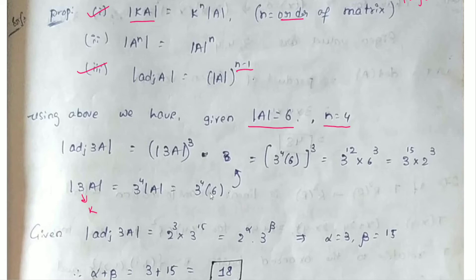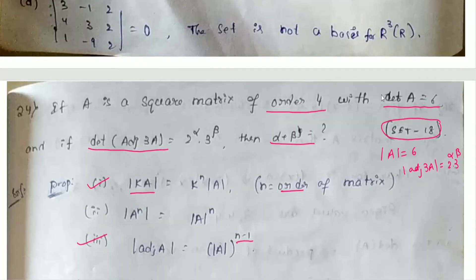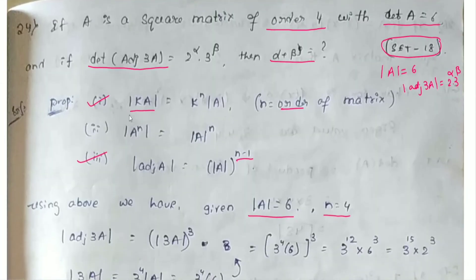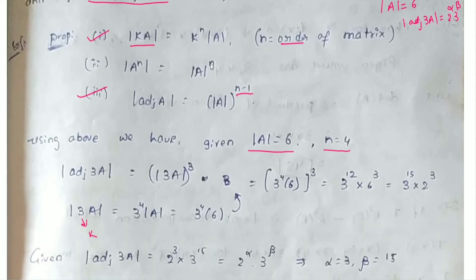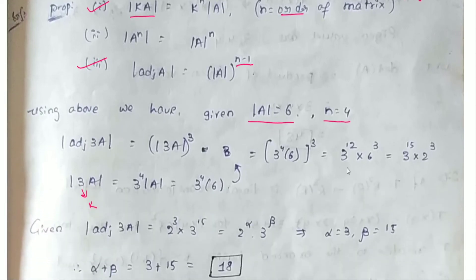Now applying the third property to find det(adj(3A)): that gives us 3 to the power 12 into 6 to the power 3. Expanding 6 to the power 3 as 2 to the power 3 into 3 to the power 3, the overall value becomes 2 to the power 3 into 3 to the power 15.